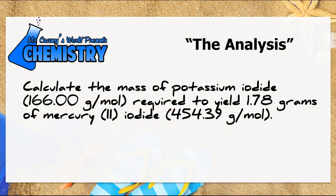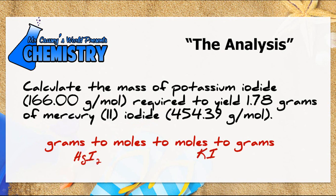When I look at a problem like this, I realize I need a balanced equation, but I don't have one. So let's plan: I want to go grams-to-moles of mercury iodide, then moles of mercury iodide to moles of potassium iodide, then to grams of potassium iodide. I need molar masses and the mole ratio, and to get the mole ratio I need a balanced equation.